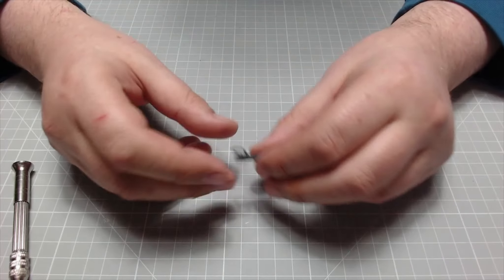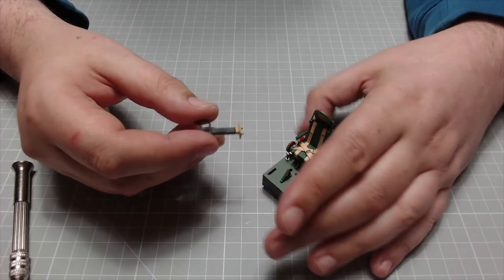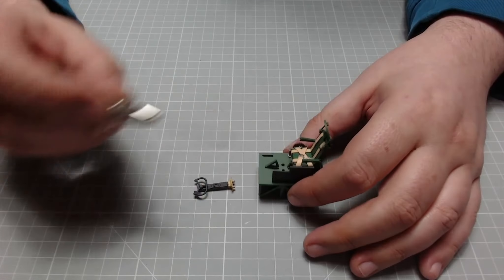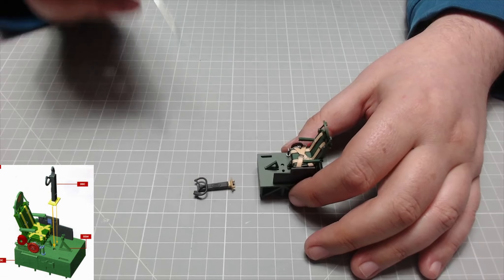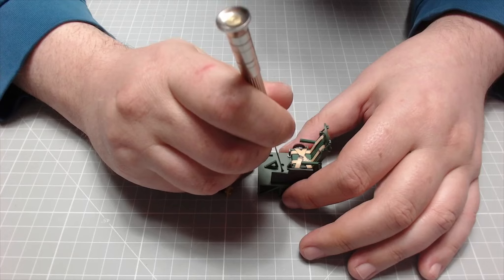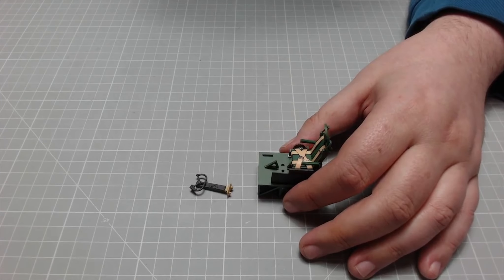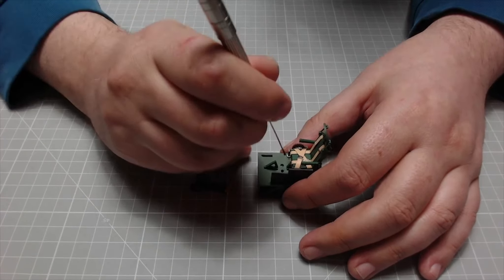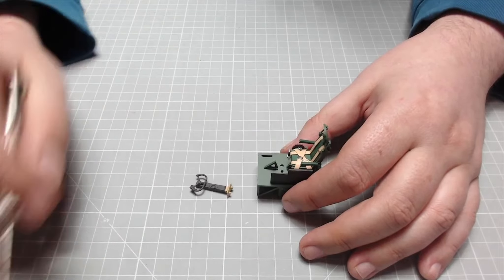Just like so, and then we're going to be putting this onto our cockpit. It's just going to be going in the two holes that are just down there. Again, we've got a larger hole and a smaller hole, so you can't really get this wrong.